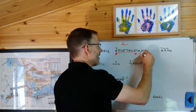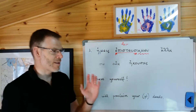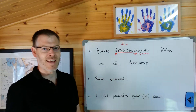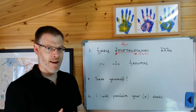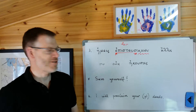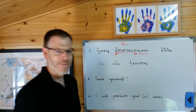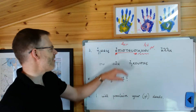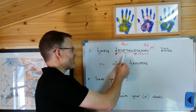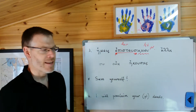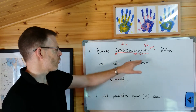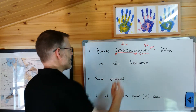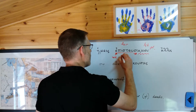But then we need to check out the ending. So think about luo, our paradigm verb: elusat, elusas, elusen, elusamen, elusate, elusan. Elusamen is the first person plural. So it's the first person plural, aorist, indicative, active of pistuo, meaning I believe — we, plural, believed. Probably translate that into an English past tense: we believed.